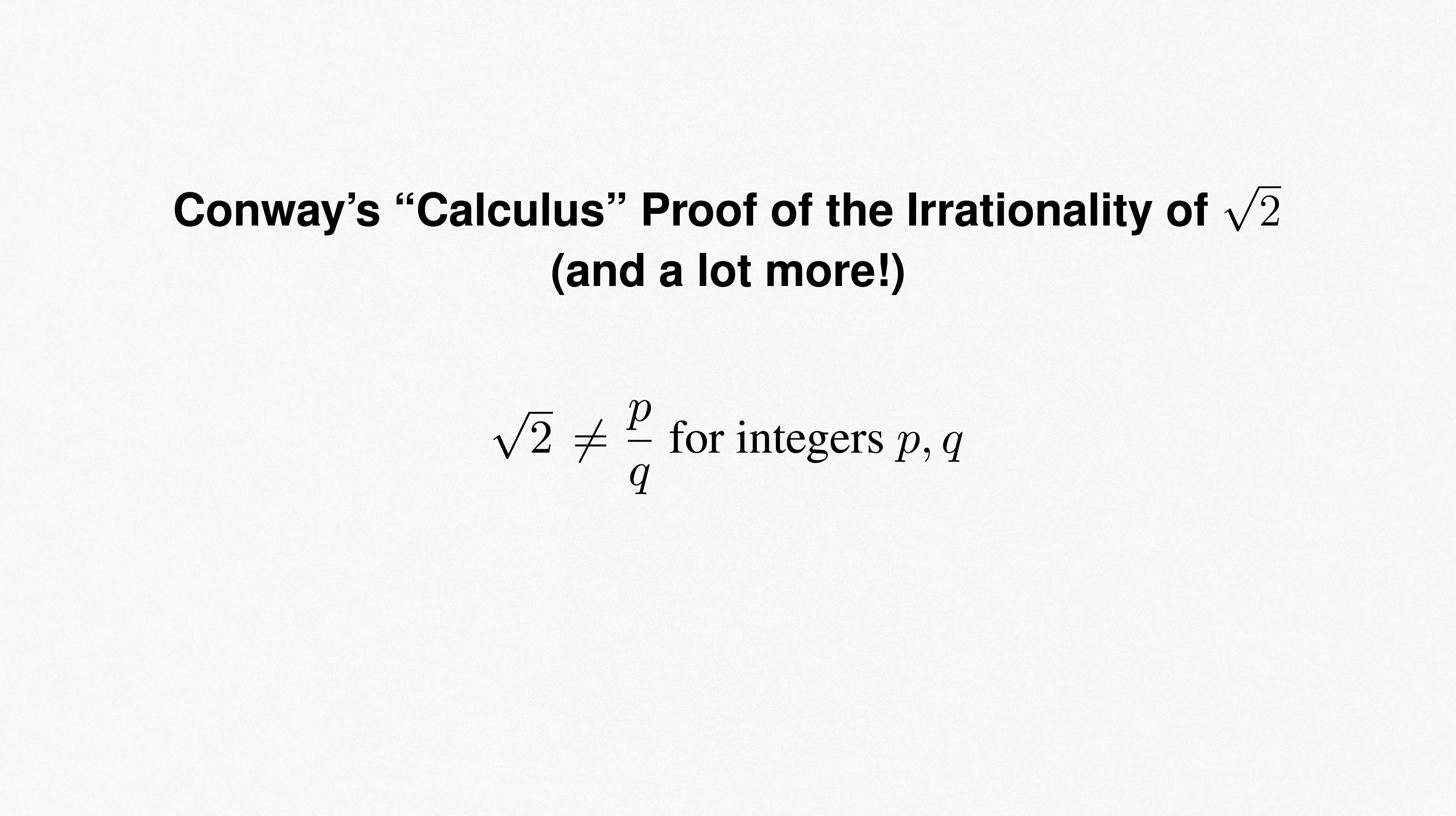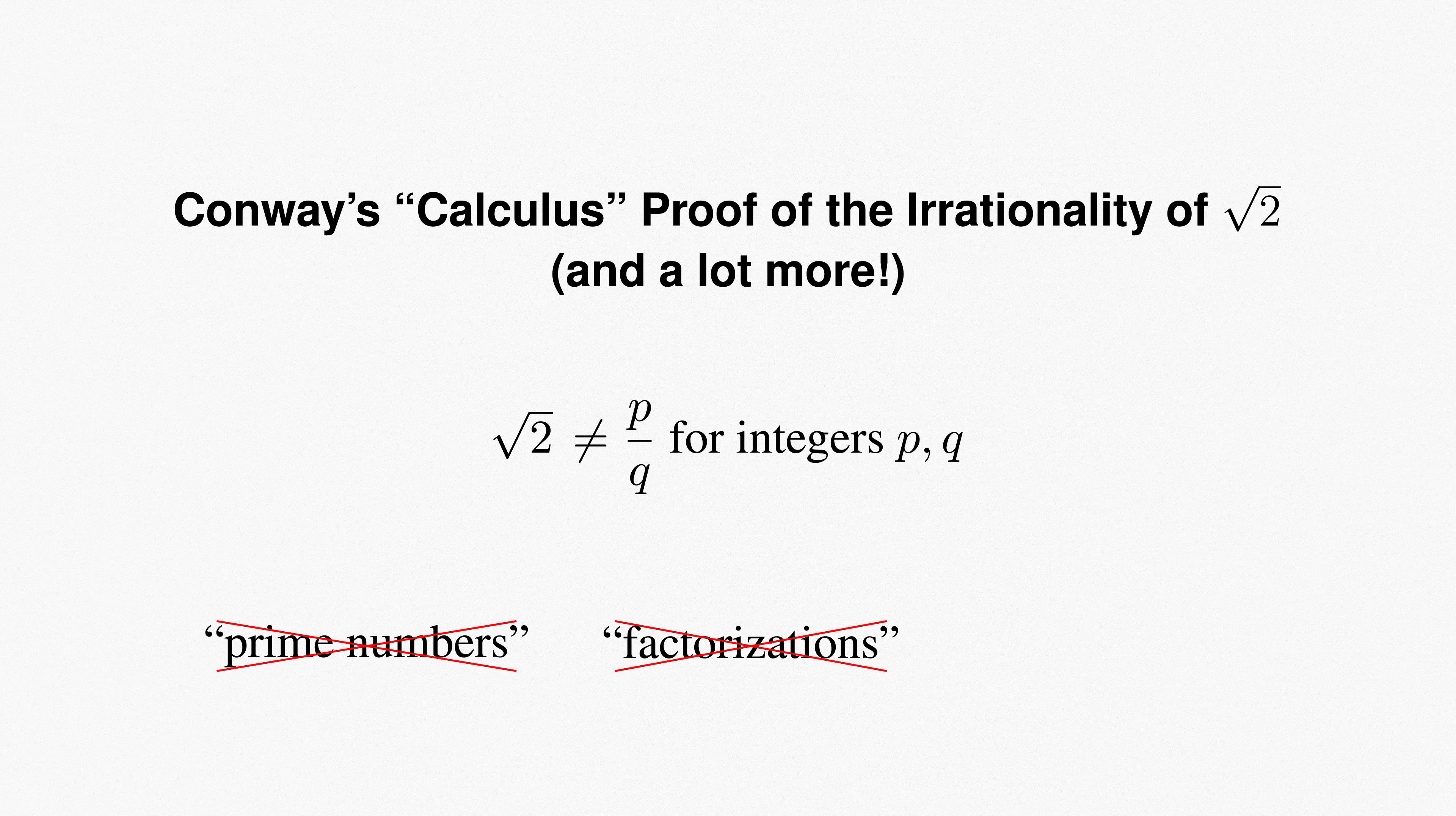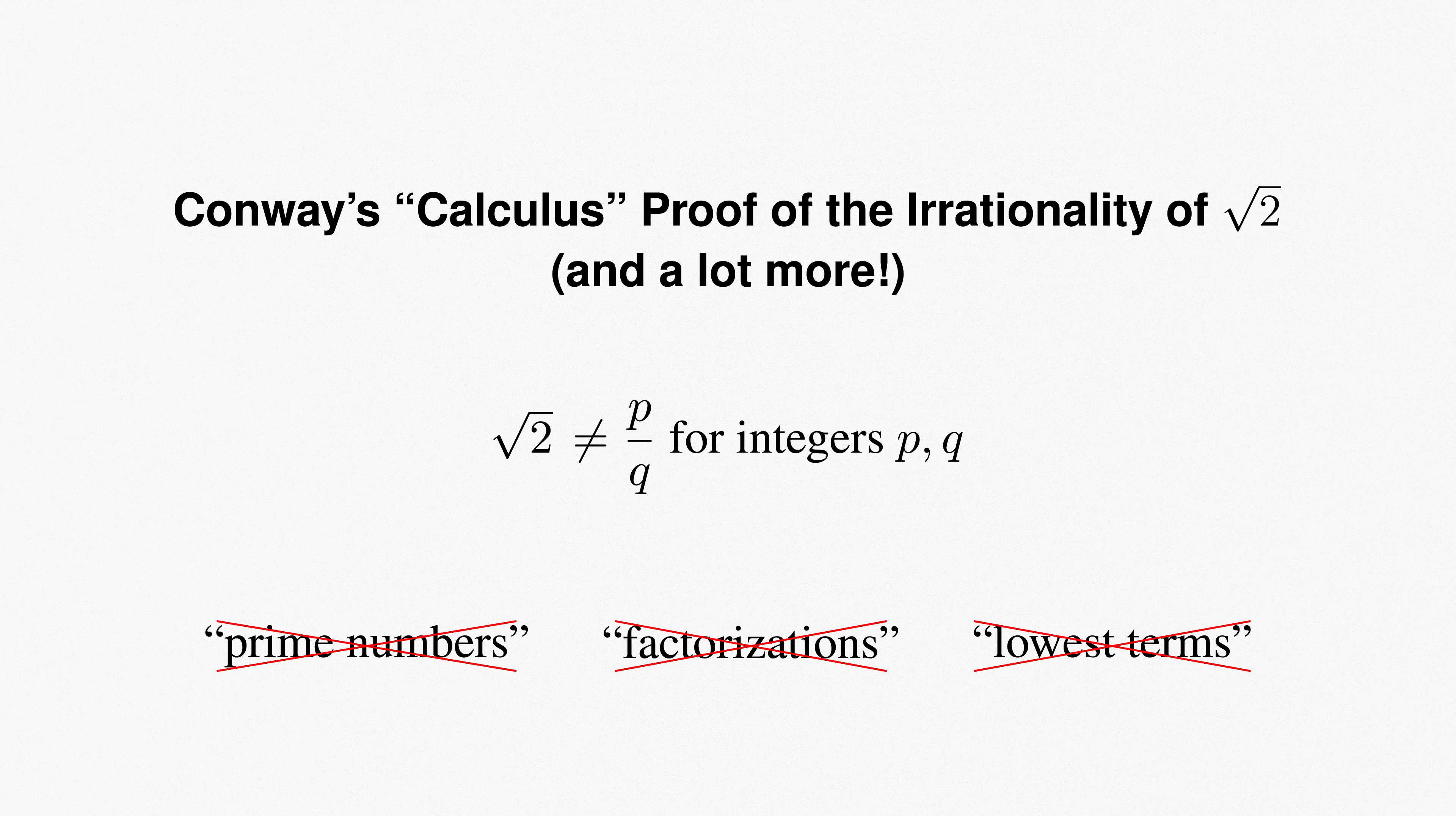What's cool about it is that it's a proof of a number-theoretic result, namely that the square root of 2 can't be written as the quotient of two whole numbers, that uses no number theory whatsoever. In particular, we won't ever mention prime numbers, factorizations, or even care whether fractions are in lowest terms. All that we need is some basic algebra and just a touch of calculus, so little that the calculus part can even be avoided.